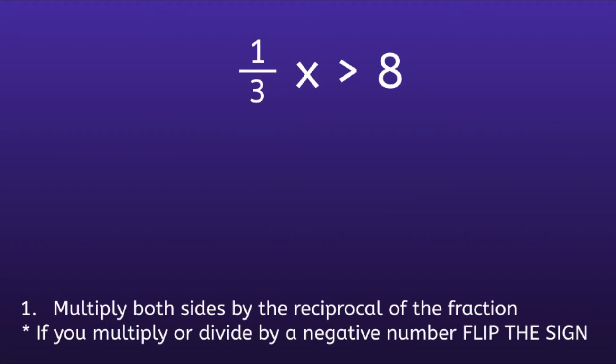So when we look at this problem, you might see the fraction and think, oh no, this is going to be super complicated. And it doesn't have to be. The one step is going to be to multiply both sides by the reciprocal of the fraction. So, reciprocal — that's a big word. What does it mean?